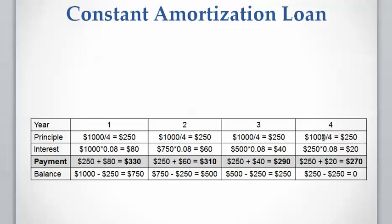For year four, the principal is again constant at $250. The interest is the balance from the previous year — $250 — multiplied by 8%, which gives $20. The payment at year four is $250 plus $20, which equals $270. The balance should equal zero: $250 from the previous year minus the principal of $250 paid at year four. If we calculated everything correctly, the balance at the end of year four must be zero.